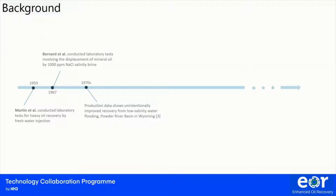Field application of low salinity water injection dates back to the 1970s, when production data showed unintentionally improved recovery from low salinity water flooding. There are a number of field examples in the Powder River Basin in Wyoming, which was flooded with water containing as low as 1,000 ppm salinity. Historically, however, little attention was paid to the impact of brine salinity on water flood microscopic displacement efficiency or the possibility of additional recovery by engineering the brine ion composition.